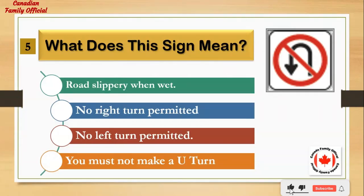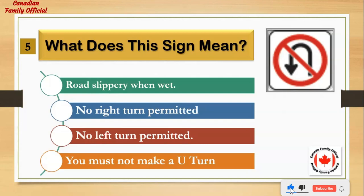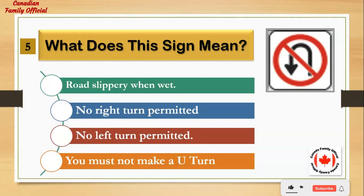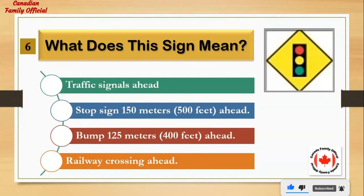What does this sign mean? Number 1: road slippery when wet. Number 2: no right turn permitted. Number 3: no left turn permitted. Number 4: you must not make a U-turn. And the answer is: you must not make a U-turn.